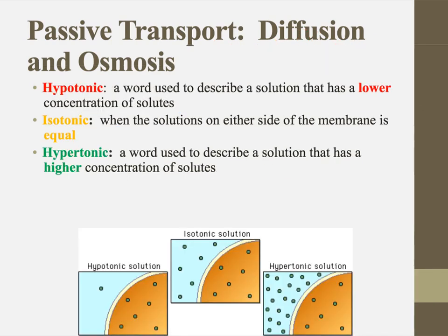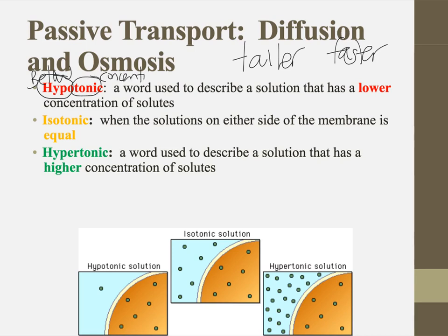With osmosis, we often use several terms to describe different solutions on either side of a membrane. These are comparative words — like taller or faster, you have to specify what you're comparing to. Hypotonic: the prefix hypo means below, and tonic refers to concentration. So hypotonic literally means something that has a concentration that is lower or below — it describes a solution with a lower concentration of solutes.